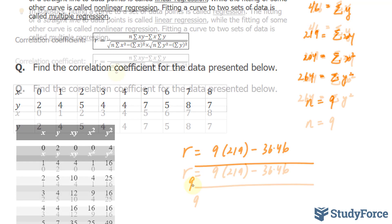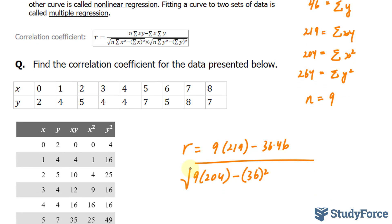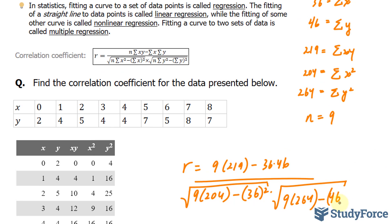We have 9 times the sum of x to the power of 2, 204, minus 36 to the power of 2. Now we have 9 times y to the power of 2 sum of 264, minus 46 to the power of 2.